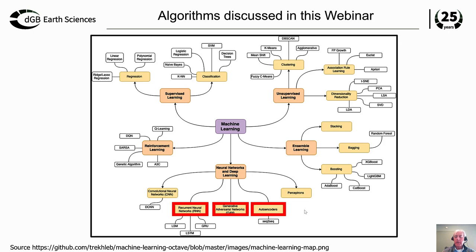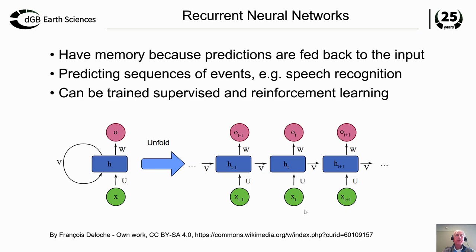The next networks we will discuss are recurrent networks, GANs, and auto-encoders. Recurrent neural networks have a built-in memory, achieved by feeding the predictions — the outputs — back into the network as input. By doing this we remember what the previous example was, like a memory function. It's not used very much in our line of business, but there are definite possibilities, especially for log prediction or anything with cyclic development. We think we should try these recurrent networks for log predictions in the near future.